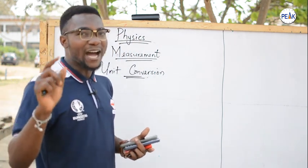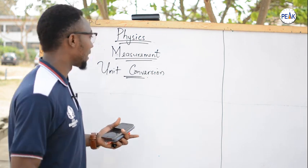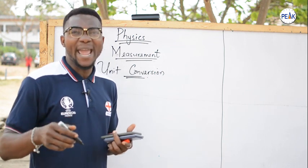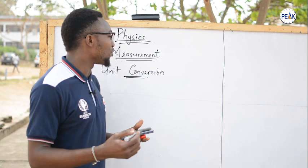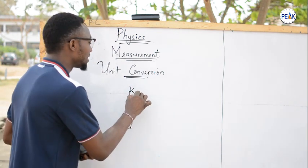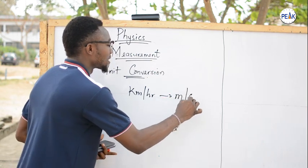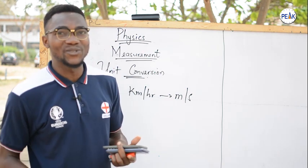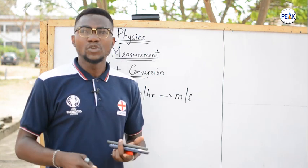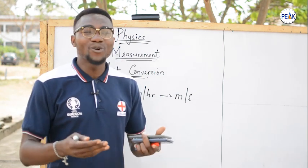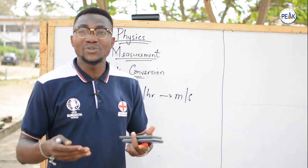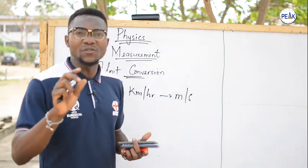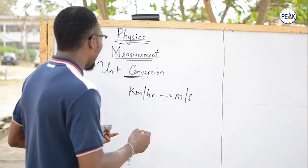With that in mind, let us quickly run through how to convert properly. In your secondary school and colleges you were taught how to convert, but they didn't tell you why and how to go about it. The basic one you know is that if you want to convert from kilometers per hour to meters per second, you were told to multiply by 1000 and divide by 3600 — but you don't really know how and why. Let me give you the trick: the chain link conversion method.